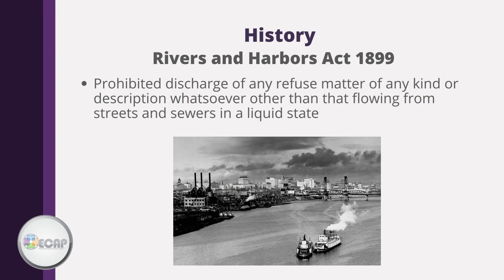The Rivers and Harbors Act of 1899 was the first law directly related to preventing the discharge of refuse matter of any kind or description whatsoever, other than that flowing from the streets and sewers in a liquid state, into navigable waters of the United States. The primary motivation had to do with harbors becoming difficult to navigate due to debris and trash collecting in them.